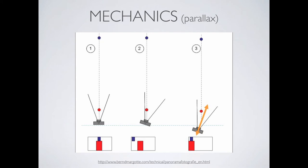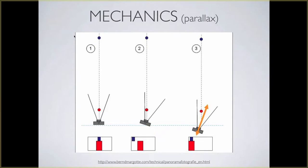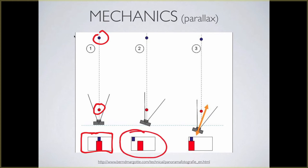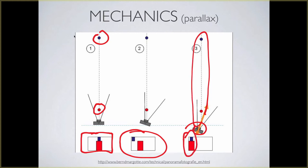Here's a view of what I was talking about. We have our blue object behind and our red object in front. We take our first image and get that result. If we move the camera — the camera is moving, not rotating — we get a result where the two objects are no longer in alignment. However, if we rotate the camera rather than move it, keeping the camera in the same place, those two objects will stay in alignment.